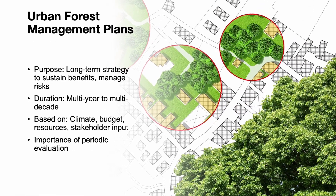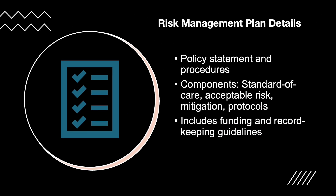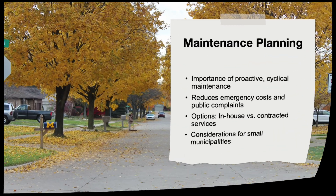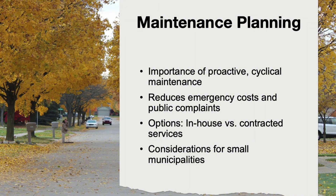Urban forest management plans set goals and strategies for sustainable tree management. These plans span years or decades and include subplans for planting, maintenance, removals, and emergency response. Stakeholders should be involved in plan development with regular evaluation of progress. A risk management plan identifies procedures for spotting, reporting, and mitigating tree risks, and should include standards of care, assessment frequency, response protocols, and record-keeping methods. Funding strategies must also be considered. Regular maintenance is essential to reduce risk and extend tree benefits, and many cities use scheduled pruning cycles to stay ahead of emergencies. Maintenance may be done in-house or contracted out, each with pros and cons.